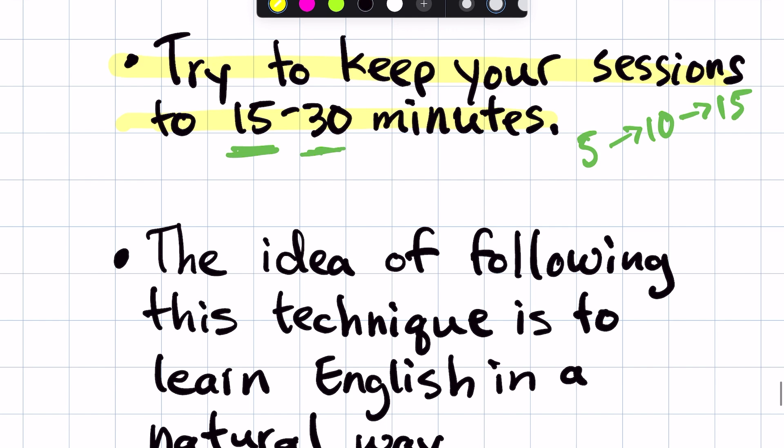And so the idea of following this technique is to learn English in a natural way. So you want to think about how when you were young and you started speaking your own native language. The way kids and babies learn language is they mimic the adults around them. And this is how they pick up language naturally. However, it's very difficult to do as an adult. So you have to put in more effort. However, the effort will pay off in the long run.